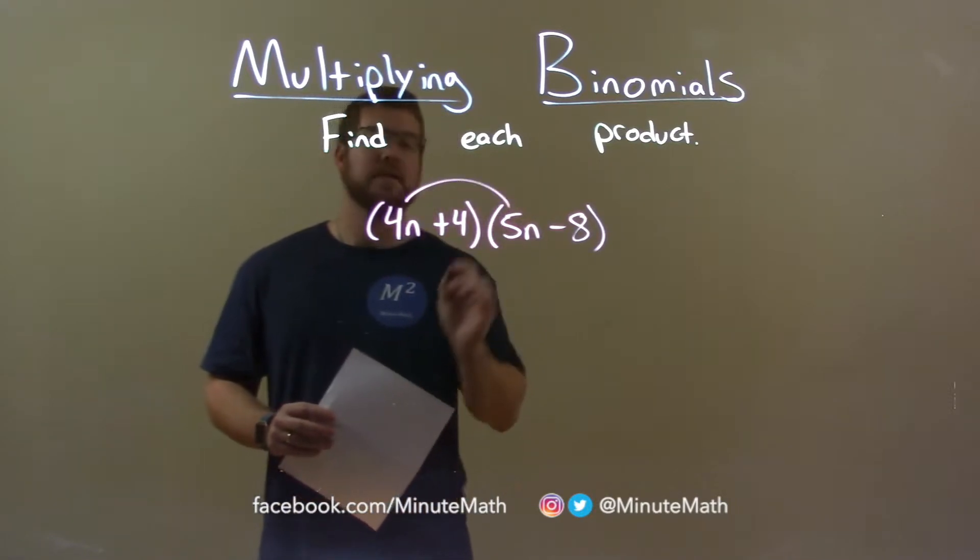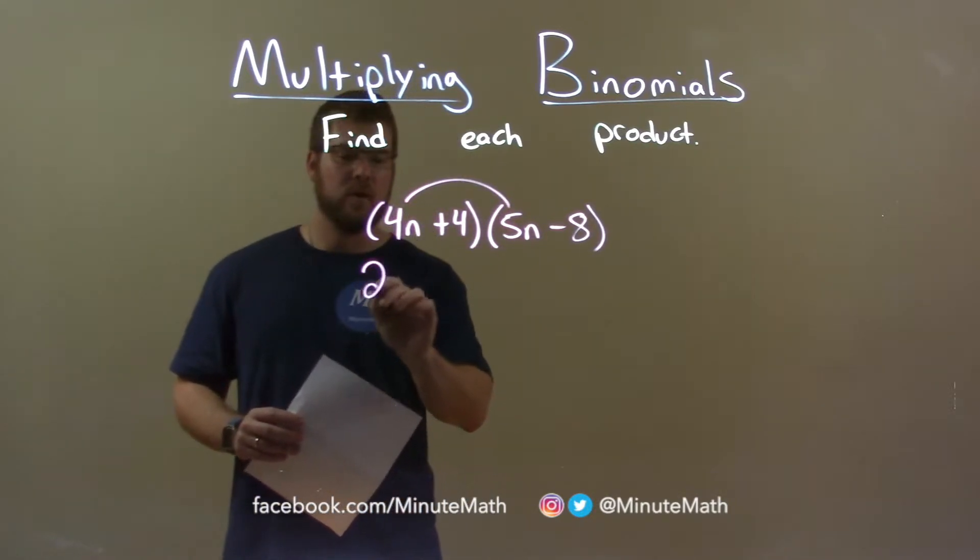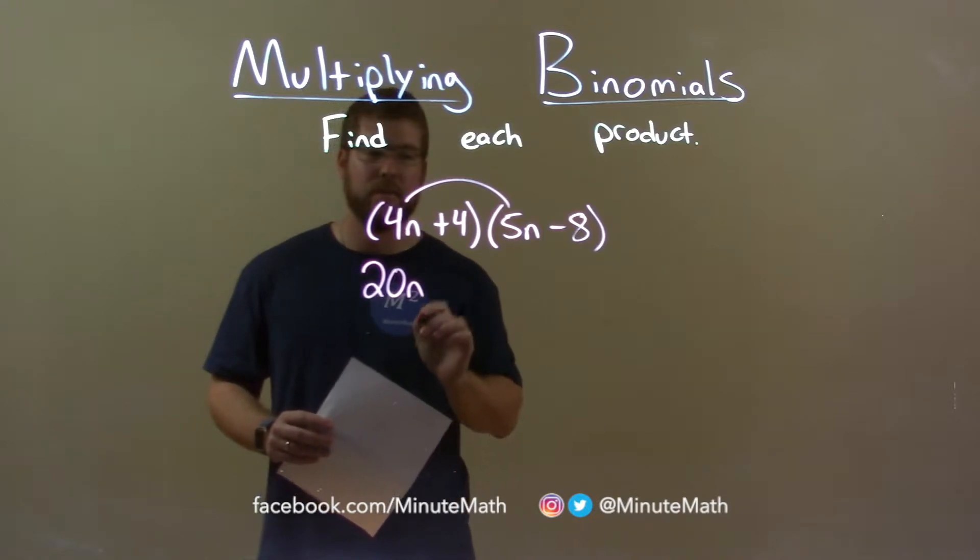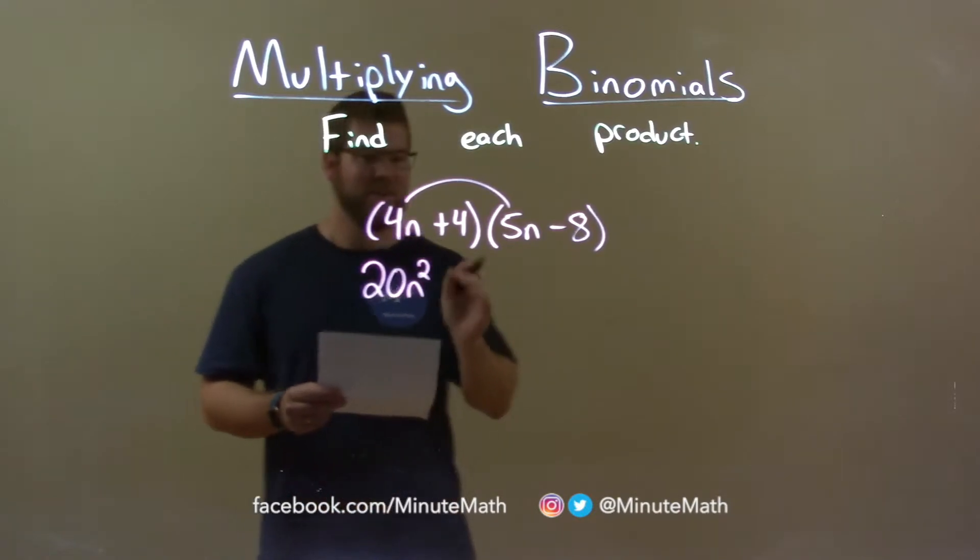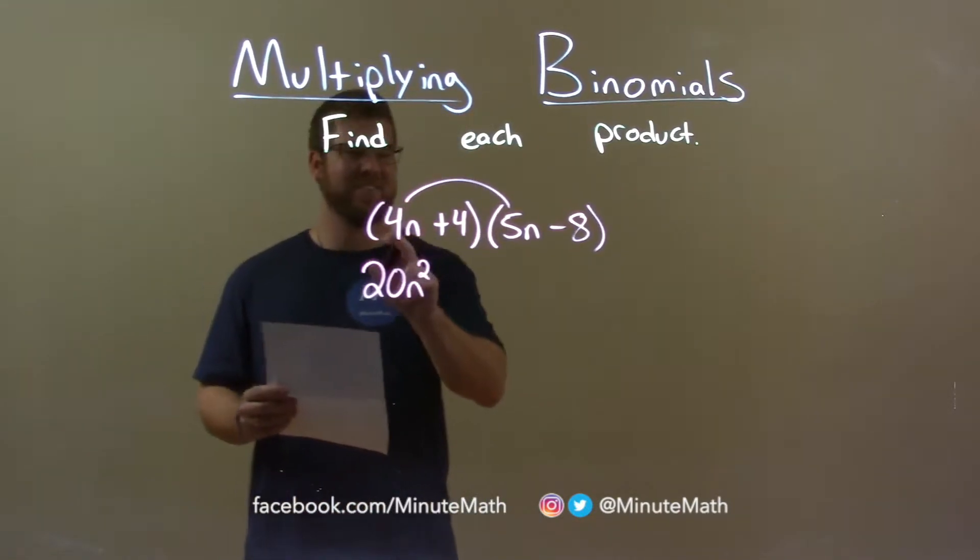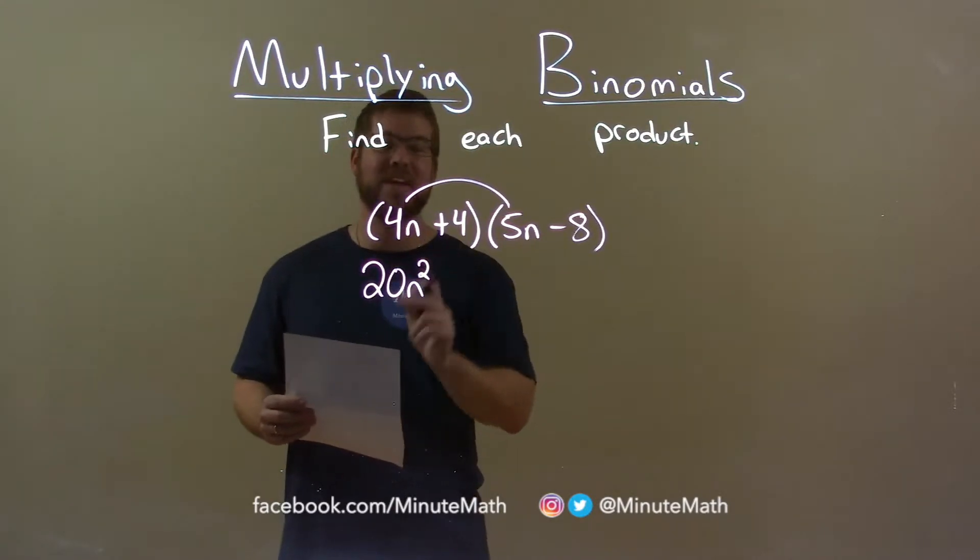So, 4n times 5n is 20n squared. Okay, I almost forgot that. 20n squared, right? 4 times 5 is 20, n times n is n squared.